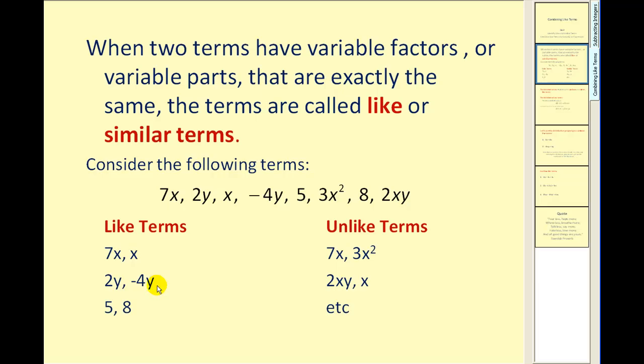2y and negative 4y are like terms, again because the variable factors or variable parts are identical, both in this case y to the first power.